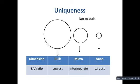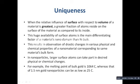Next, what are the consequences of this large surface-to-volume ratio? Point one: when the relative influence of surface with respect to volume is greatest, a greater fraction of atoms will reside on the surface of the material as compared to inside. So when the relative surface area becomes more predominant compared to the volume, most of the atoms of that material will be found on the surface.